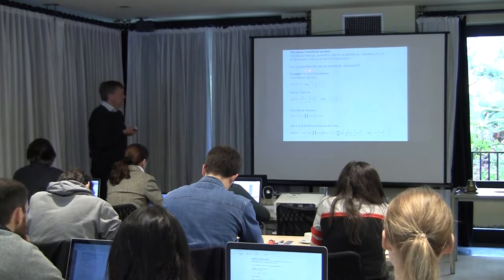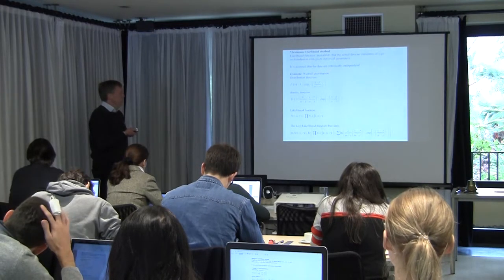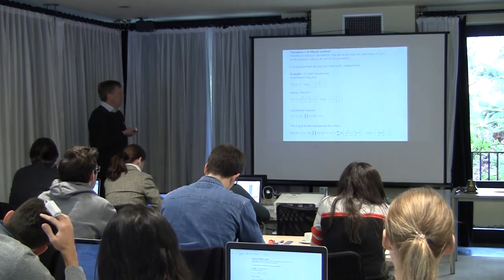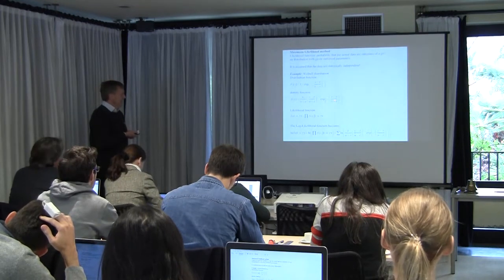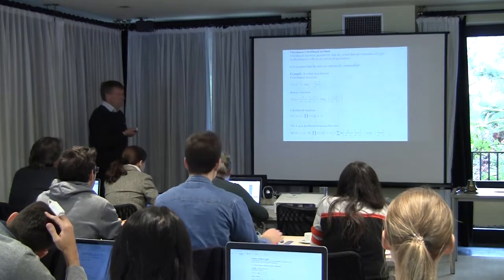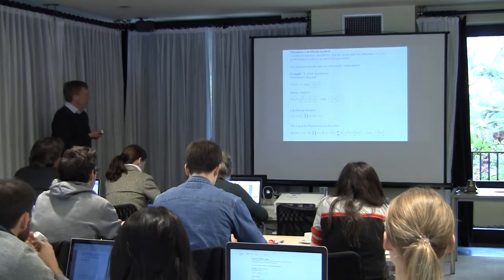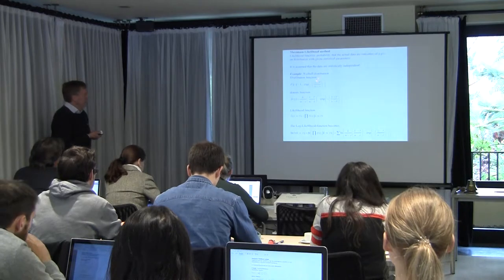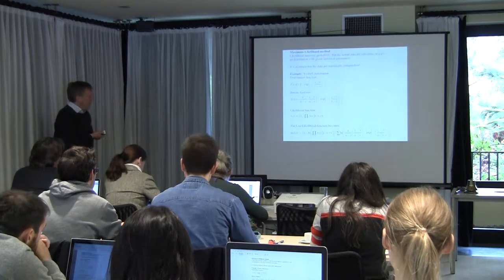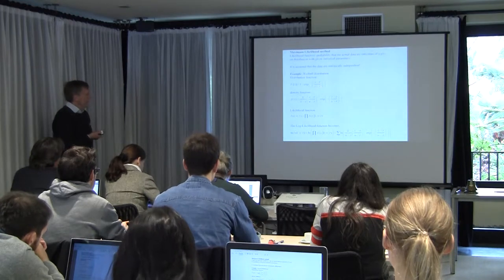As an example, consider the Weibull distribution, which has this distribution function and density function. This is a three-parameter Weibull distribution with a scale parameter w, a shape parameter, and a threshold gamma.